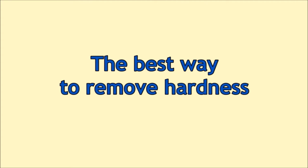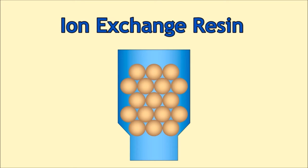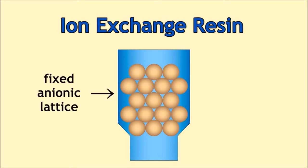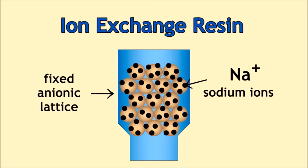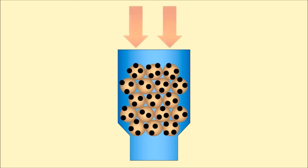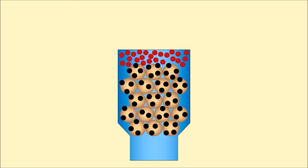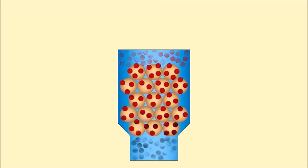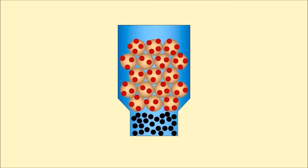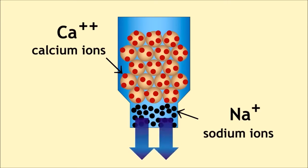The best way to remove hardness is actually to use something called an ion exchange resin. These have a fixed anionic lattice, a bit like clay, initially balanced by positive sodium ions. As hard water flows through, the calcium ions are exchanged for the sodium ions, so that the calcium ions sort of stick to the clay, and the sodium ions come out into the water. In this way the water is softened, because the calcium is no longer there.